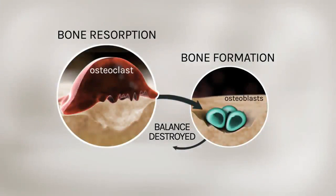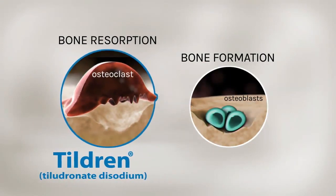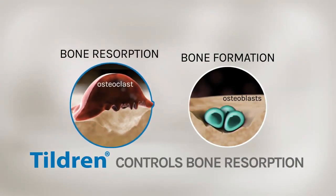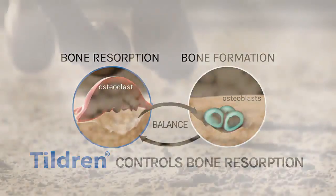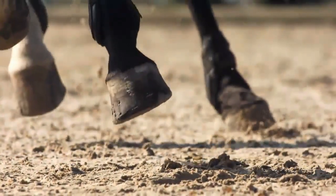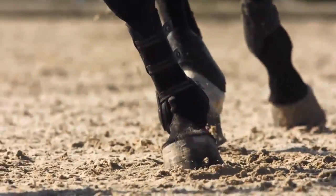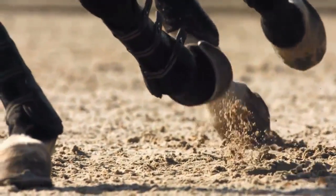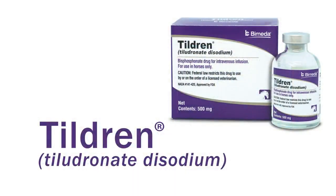Tildrin, with active ingredient Tildrinate disodium, acts to regulate bone remodeling by reducing bone resorption. Studies have shown that horses treated with Tildrin have significant improvement in lameness associated with navicular syndrome.